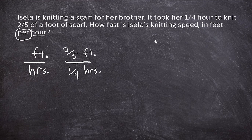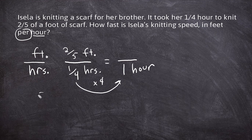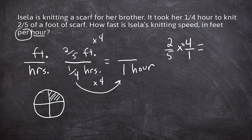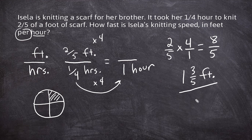We want to convert this into a unit rate per hour, changing one-fourth into one hour. To change one-quarter hour into one hour, we multiply by four, because four quarters make one hour. We increase the denominator by a factor of four, so we do the same to the top — multiplying two-fifths by four, expressed as four over one. Two times four is eight, and five times one is five, giving us eight-fifths. Renaming as a mixed number: eight divided by five is one and three-fifths feet per hour.